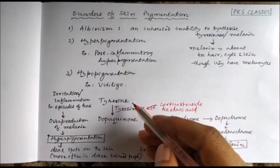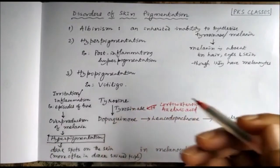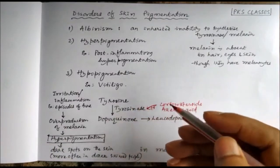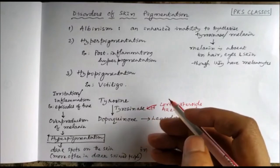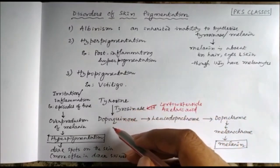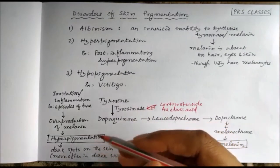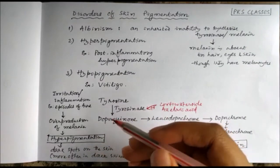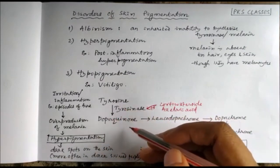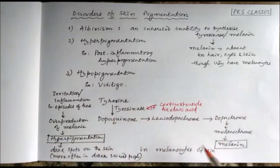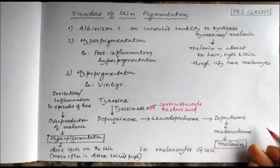This melanin is synthesized from the amino acid tyrosine. Tyrosine, by the action of tyrosinase, will be converted to dopaquinone. First there will be formation of dopa (dihydroxyphenylalanine) from tyrosine, then it will be converted to dopaquinone, then a series of changes will occur.